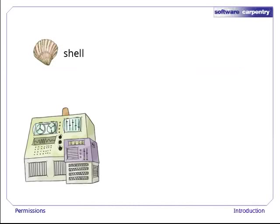In the previous episodes in this lecture, we looked at how to use a command shell to interact with a computer, and met a few commonly used commands, such as pwd, mkdir, and cp. We also met the wildcard character star, and saw how to redirect output with greater than, and create pipes with pipe.